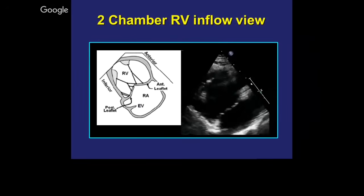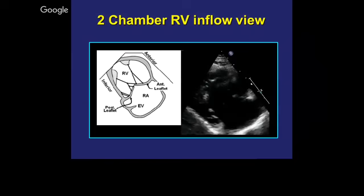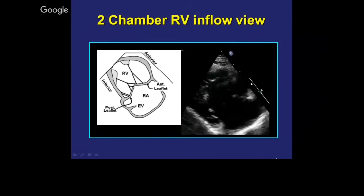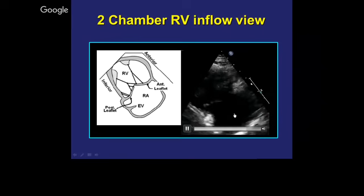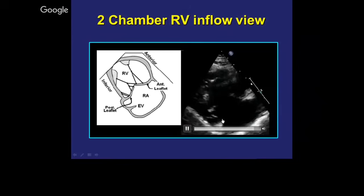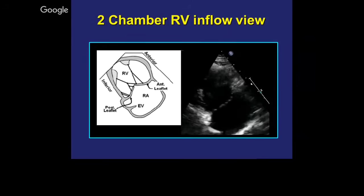This is what we call the right ventricle inflow view, because you can see the inflow of the tricuspid valve — the previous one was the outflow view. This is the inflow with the tricuspid valve at the base of the screen. That's your tricuspid valve, and of course this is the right atrium and this is the right ventricle. Sometimes you might see a prominent eustachian valve, which is more prominent when we're doing a transesophageal echocardiogram.